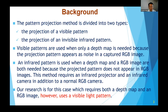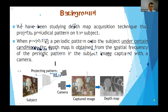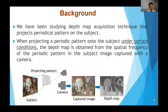Our research addresses the case which requires both a depth map and RGB images. However, we use a visible light pattern. We have been studying a depth map acquisition technique that projects a periodical pattern on the subject. When a periodic pattern such as a line-space pattern is projected onto the subject under certain conditions, the depth map is obtained from the spatial frequency of the pattern in the image captured with a camera.